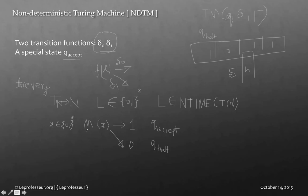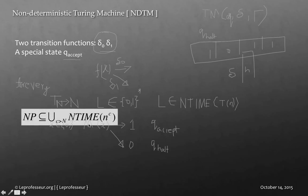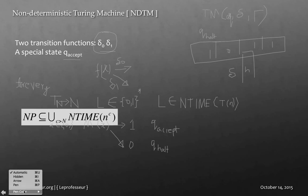So that is our non-deterministic Turing machine. We can represent it mathematically as the union of all problems whose time is non-deterministic time n to the power c. Remember in deterministic time it was 2 to the power n to the power c, but here it's n to the power c — so for n equals 100 that is 100 to the power 100, which is a huge number that still falls under non-deterministic time.